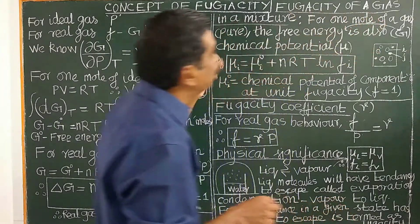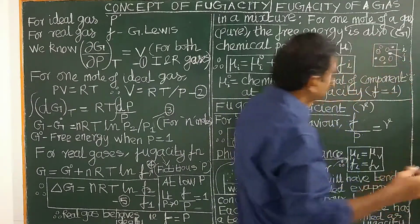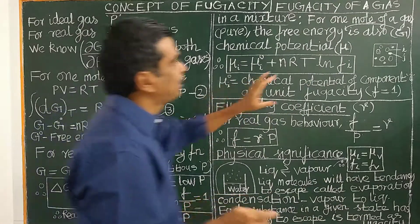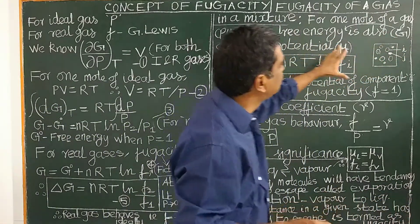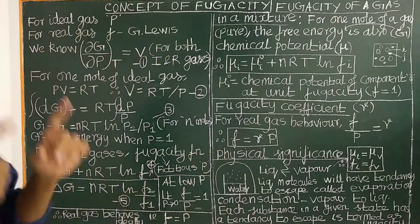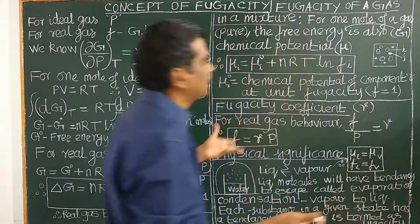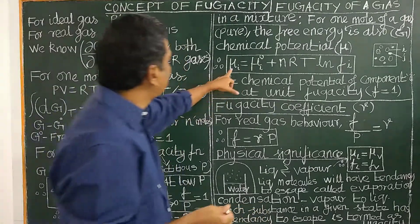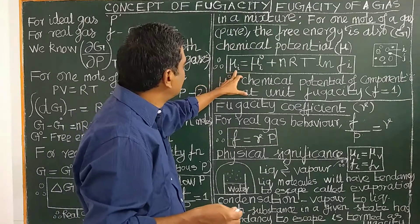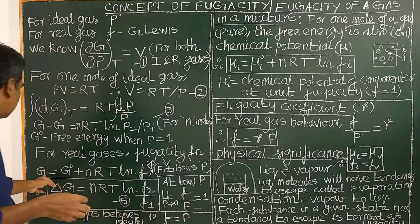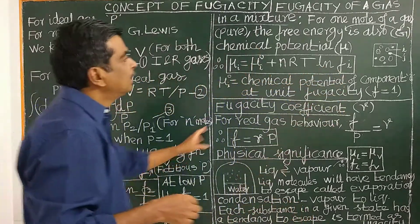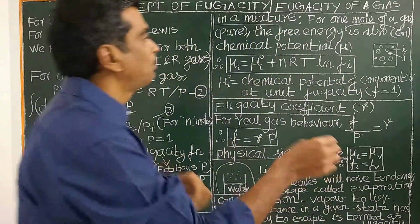Now let us see the fugacity of a gas in a mixture. Let us consider a gaseous mixture with two gaseous components, I and J. For one mole of a pure gas, the free energy of the component I is equal to the chemical potential. For one mole of a pure gas, free energy is the same as chemical potential. Therefore, μi = μi° + nRT ln Fi, where Fi is the fugacity of the i-th component. μi° is the chemical potential of component I at unit fugacity, similar to G° being the free energy when pressure equals unity.